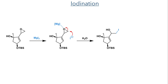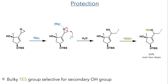Taking this compound forward, it was then reacted with magnesium iodide. The magnesium first coordinates to the epoxide, making it more electrophilic, and the iodide can then attack at the less sterically hindered centre. The secondary hydroxyl group was then protected as a TES group using TES chloride, once again with the selectivity arising from steric hindrance.